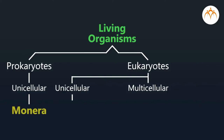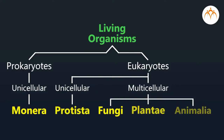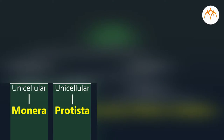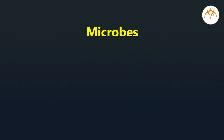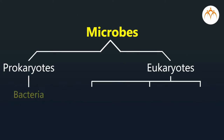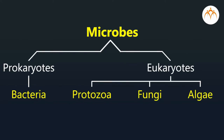So now, students, can you tell me the names of kingdoms which include microbes from the five kingdom system? Kingdom Monera and Kingdom Protista include microorganisms. Let's have a look at the names or groups of microbes.